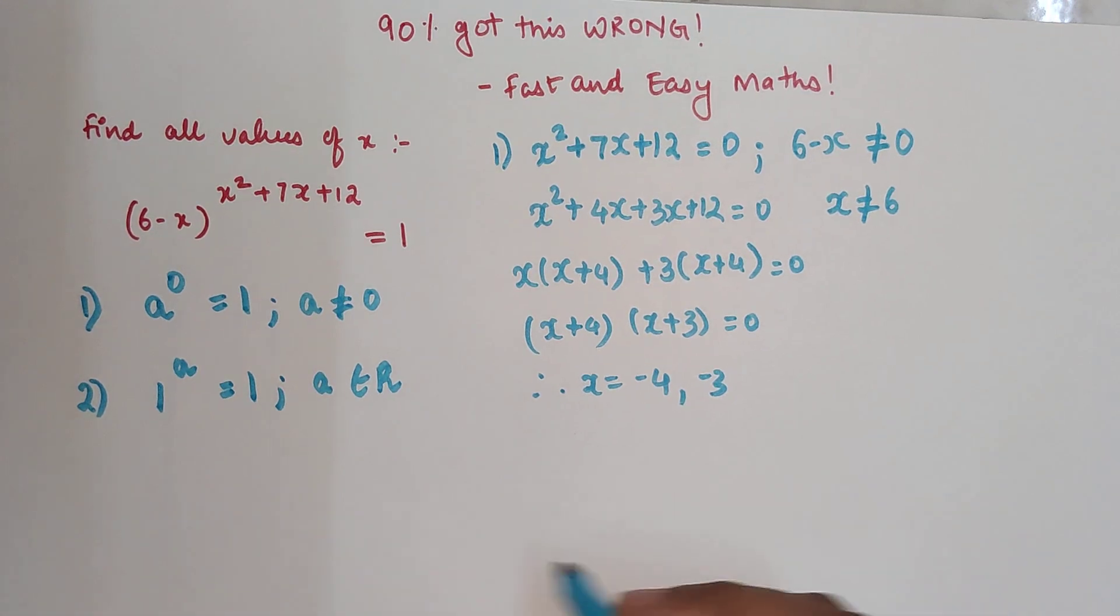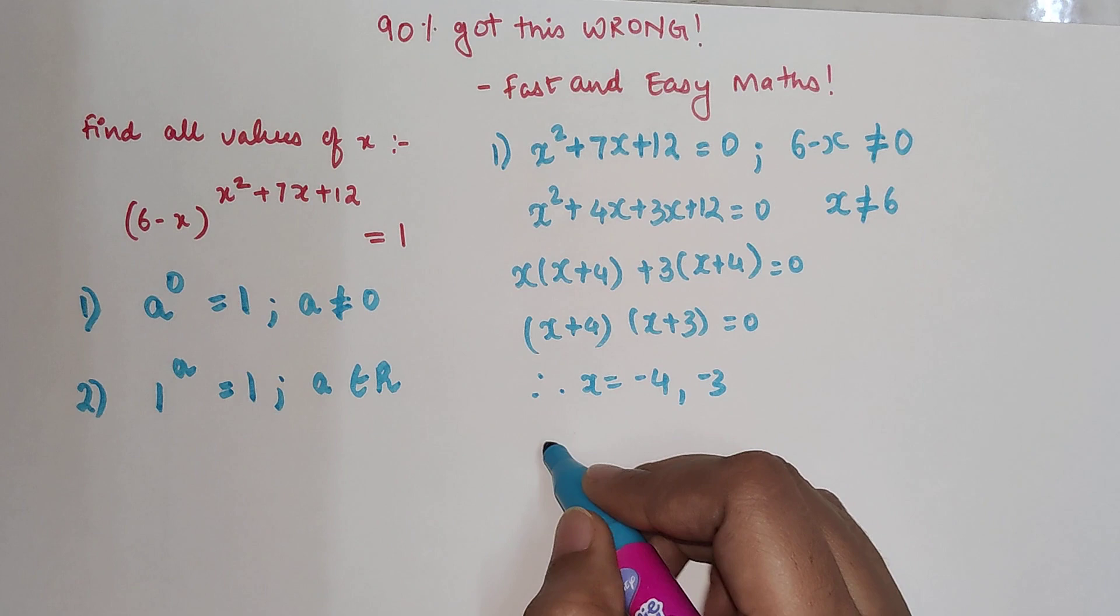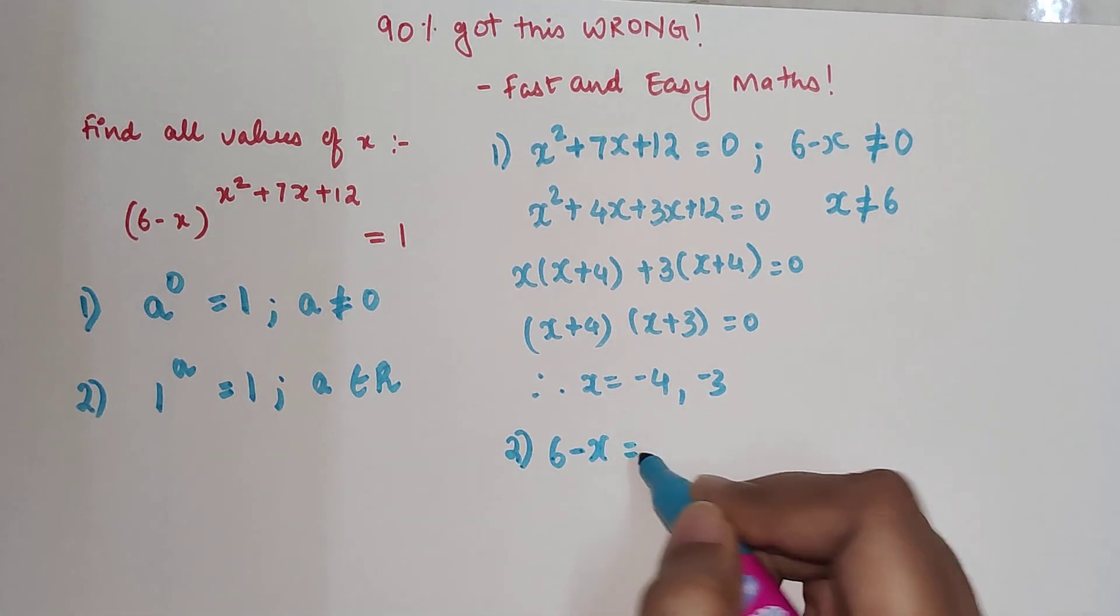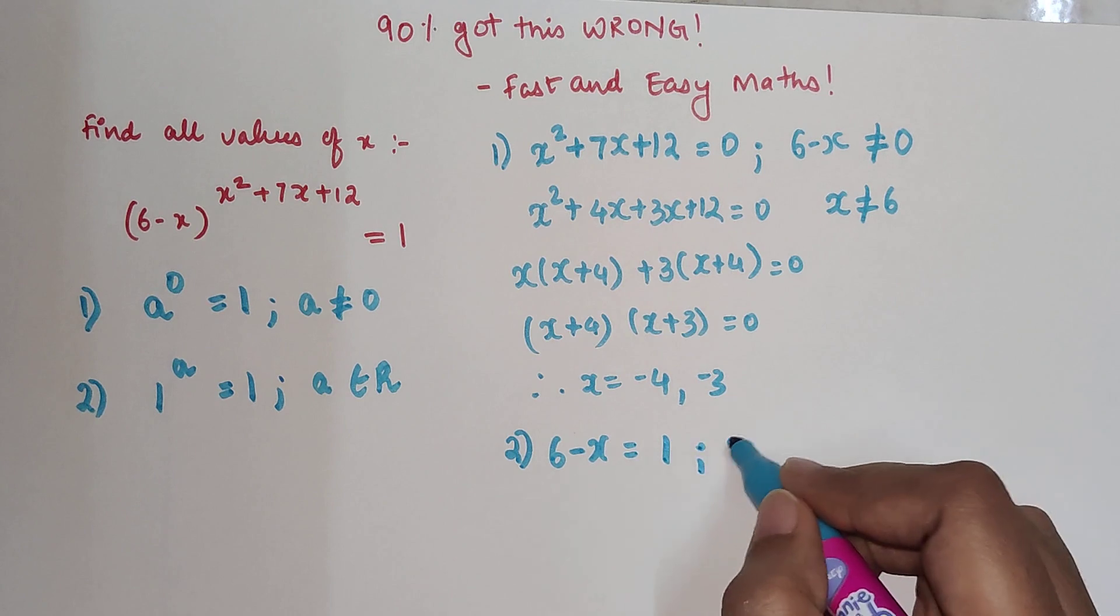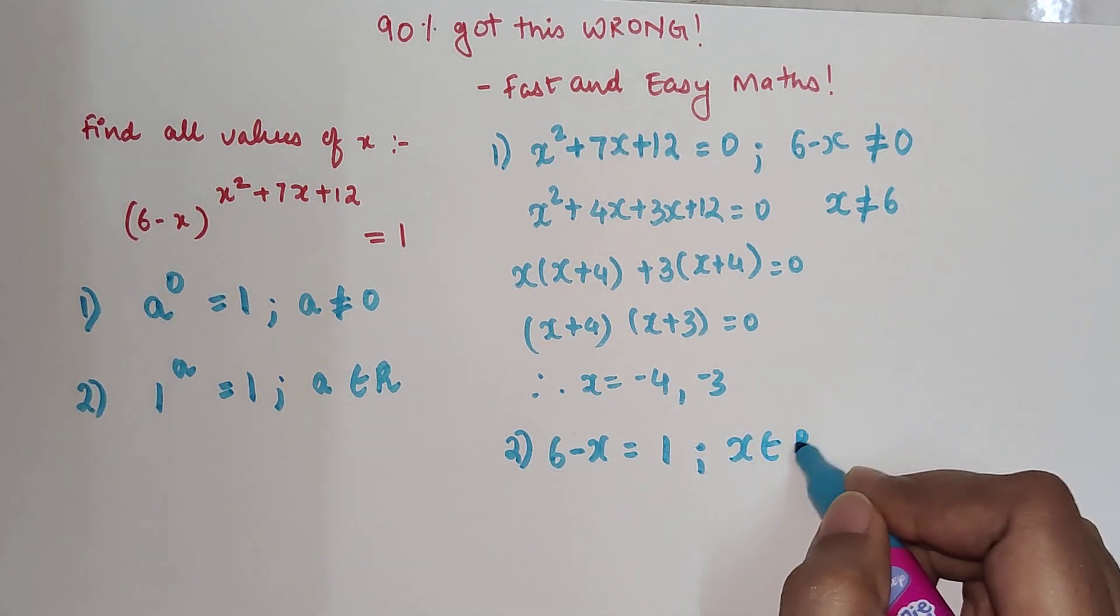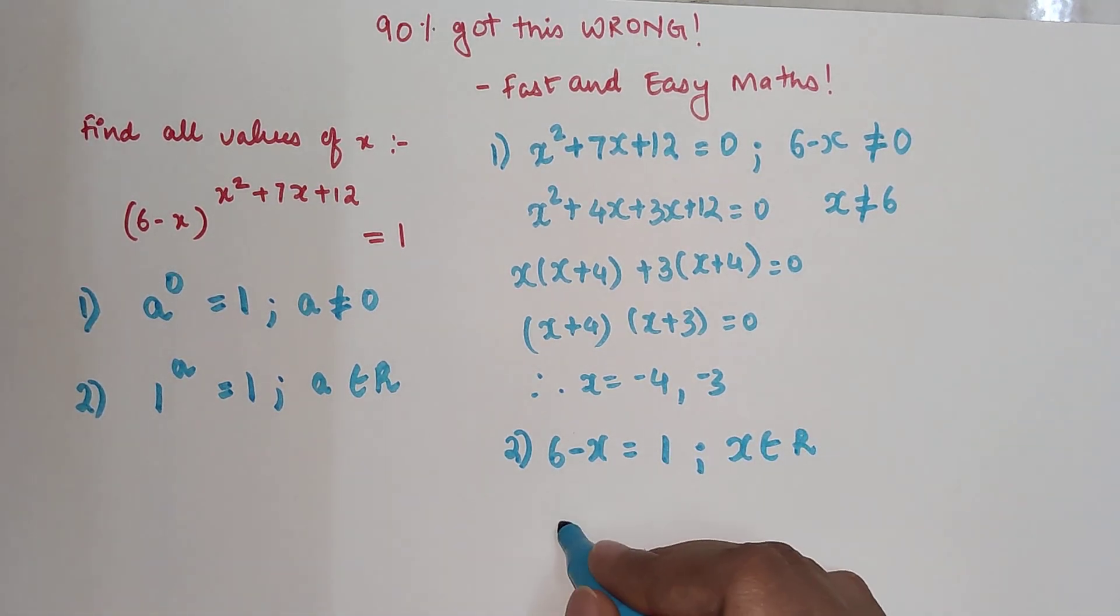So now, the second case means 6 - x equals 1, provided x is belonging to real numbers. From solving this, I get x equals 5, which is belonging to real numbers. So I can say this value also can be taken.